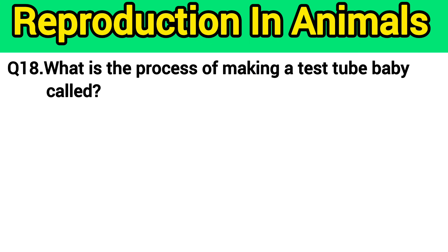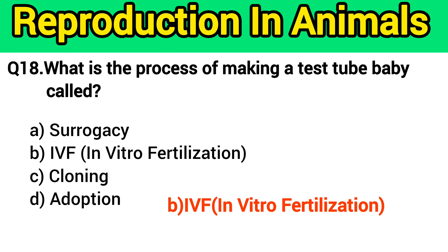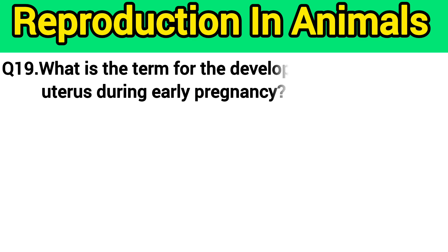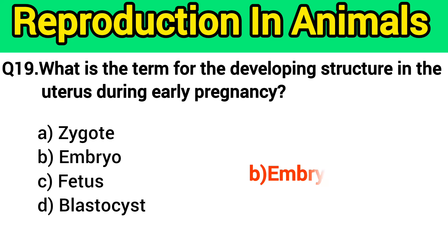Question number 18: What is the process of making a test tube baby called? The right answer is option B — in-vitro fertilization. Question number 19: What is the term for the developing structure in the uterus during early pregnancy? The right answer is option B — embryo.